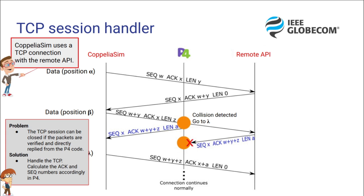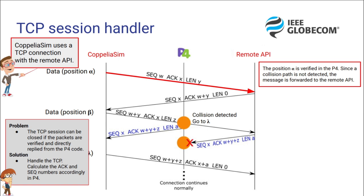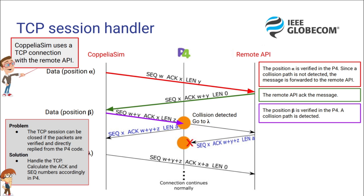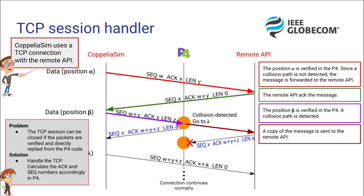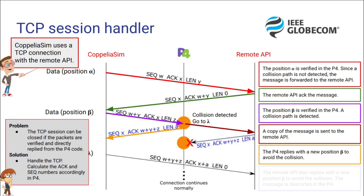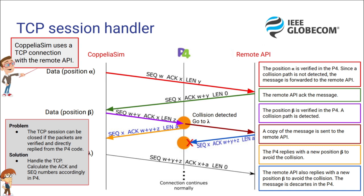For this, the position is verified in the P4. Since the collision path is not detected, the message is forwarded to the remote API. The remote API sends an ACK message. A new position is verified in the P4. If a collision path is detected, then a copy of the message is going to be sent to the remote API, and the P4 is going to reply with a new position to avoid the collision. The remote API also replies with the new position, but this message is discarded by the P4. The new position is verified by the P4 and the algorithm continues.